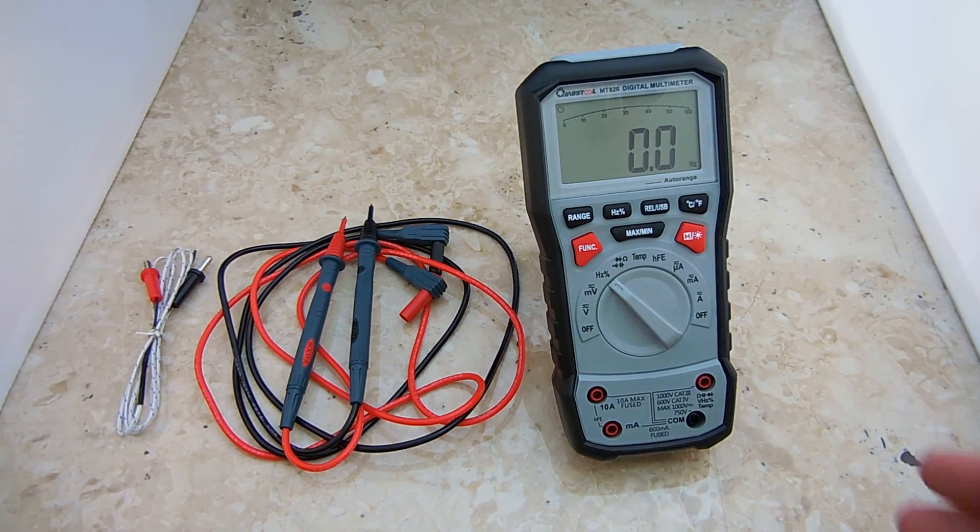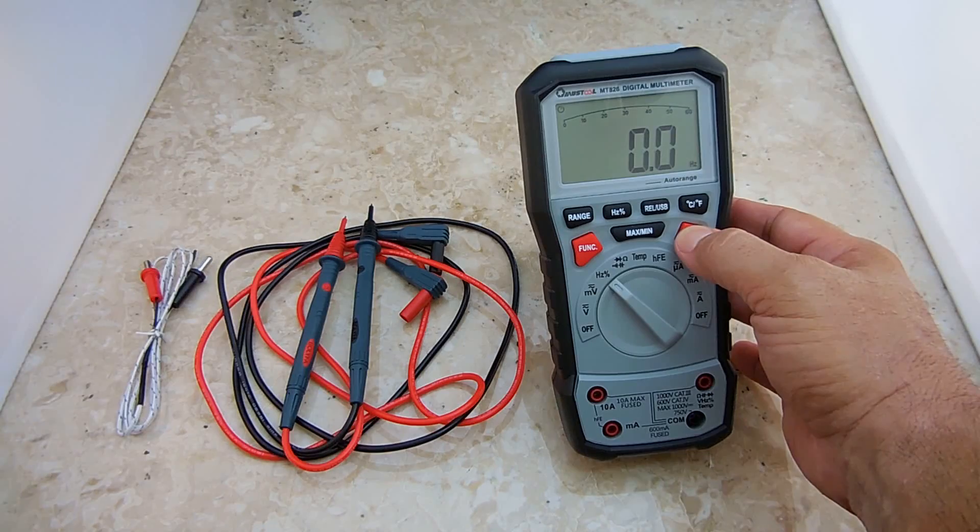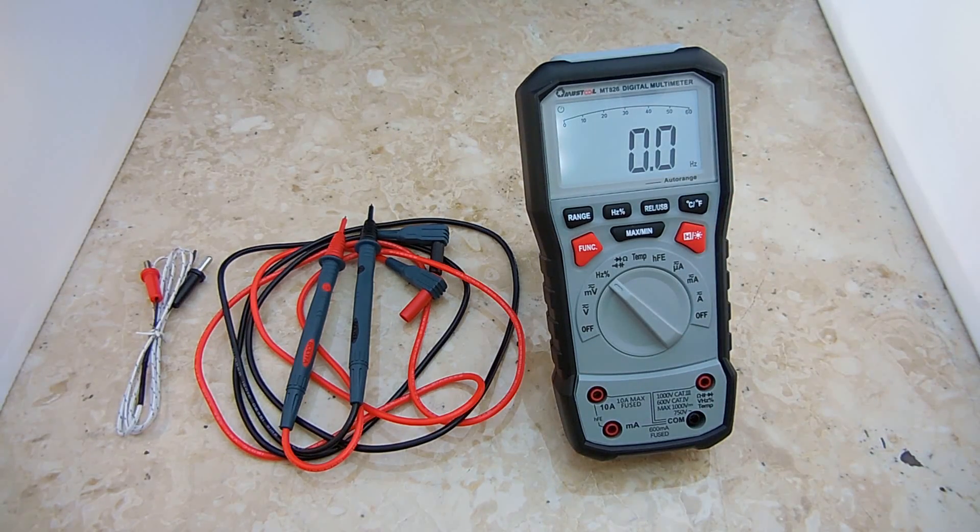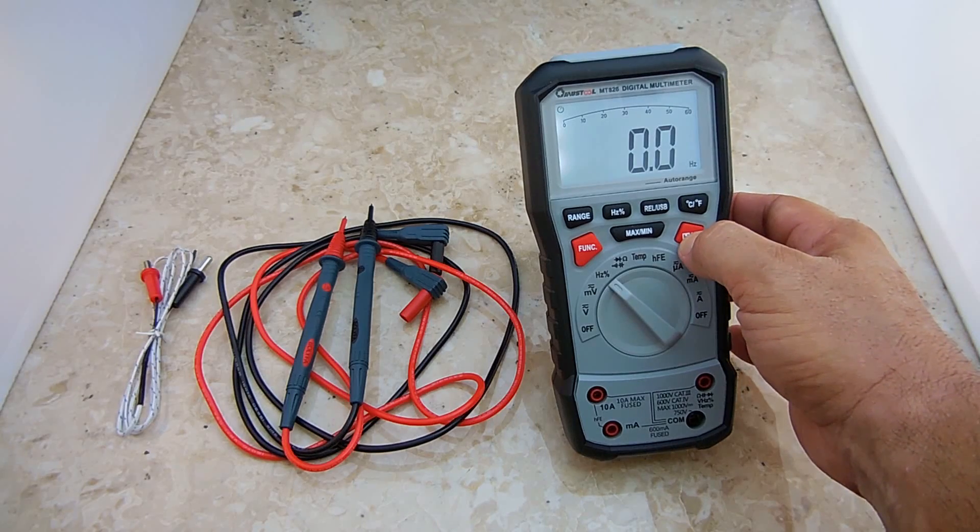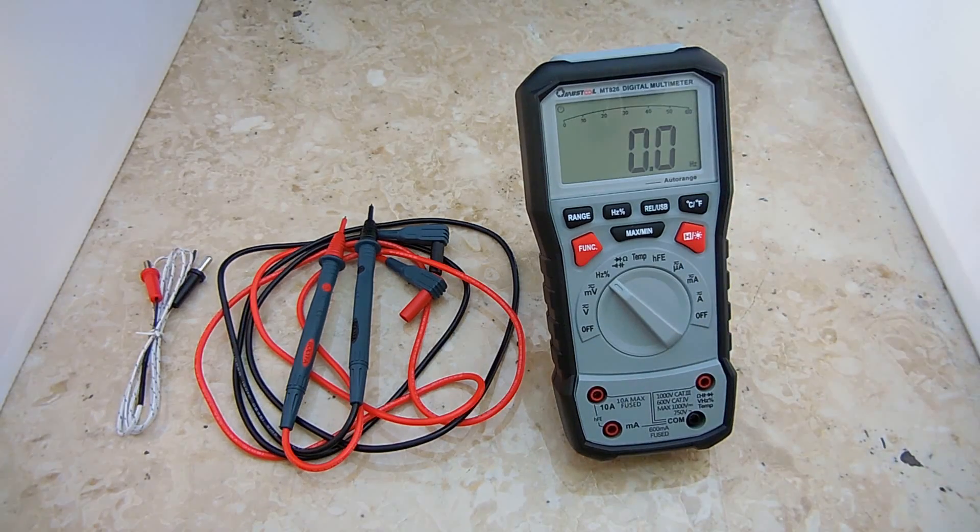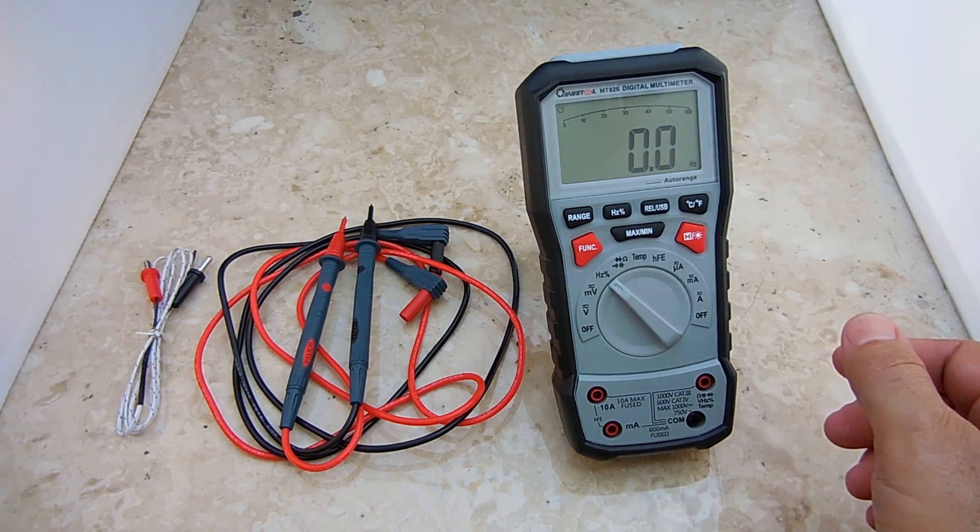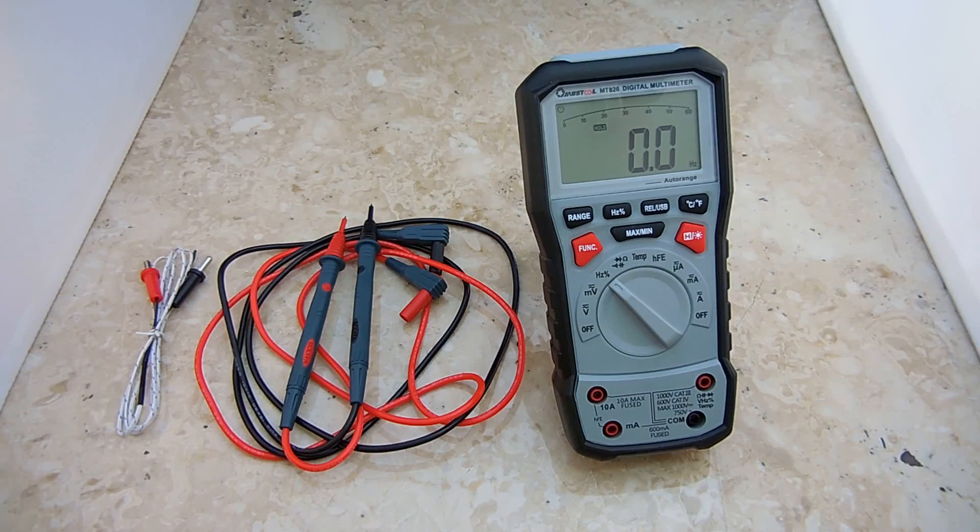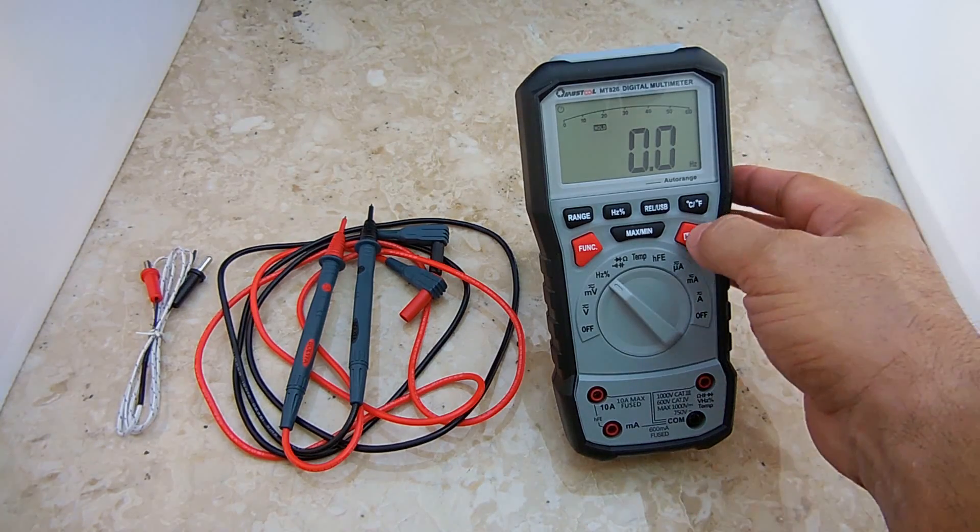If you wanted to turn on the backlight, you push and hold this button here and you have a nice backlight on. Push and hold and you turn the backlight off. When making measurements, you may want to hold the display. Very simple. One quick press of this will hold the display. Press it again to release.